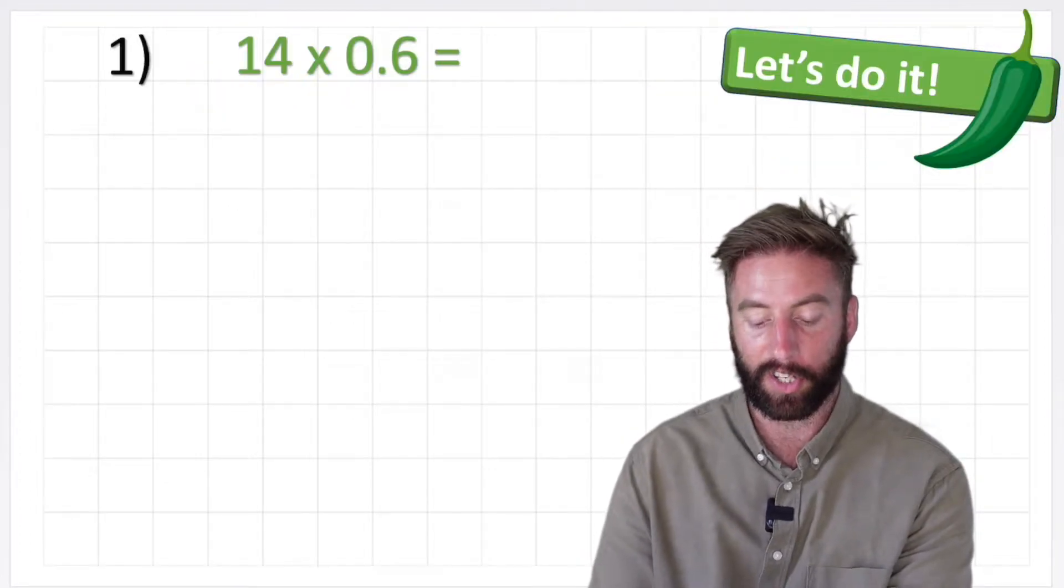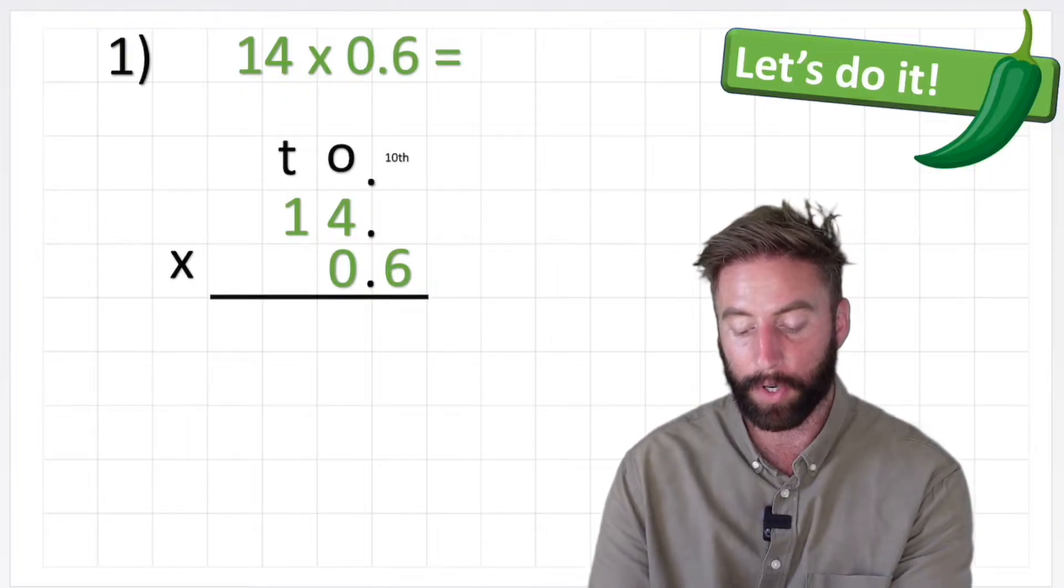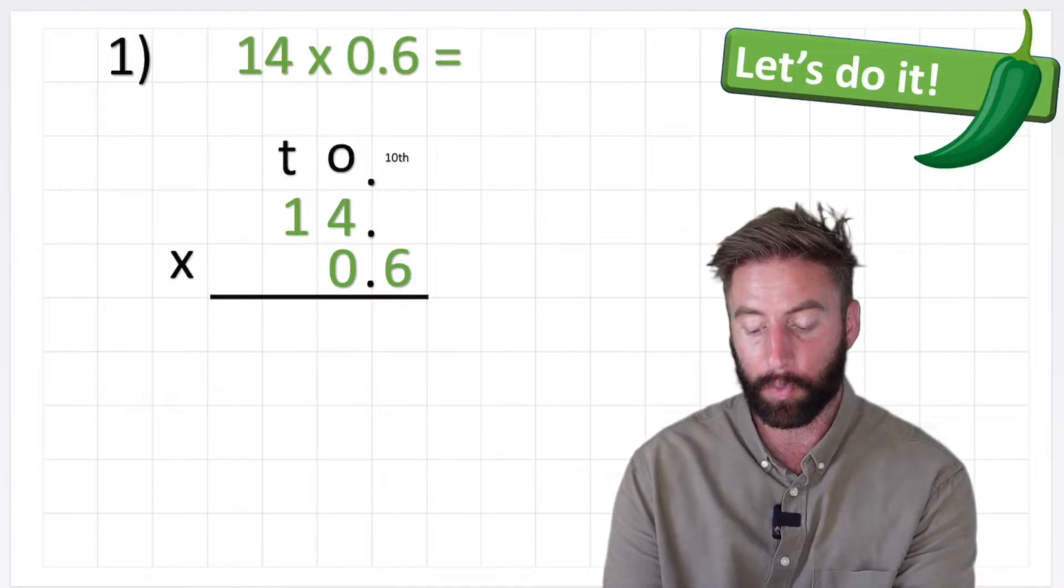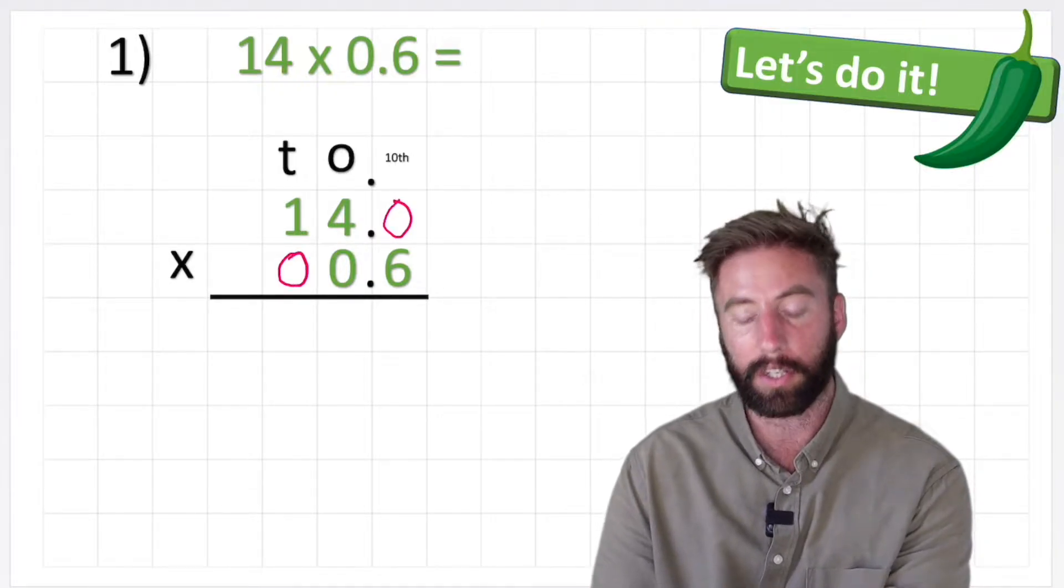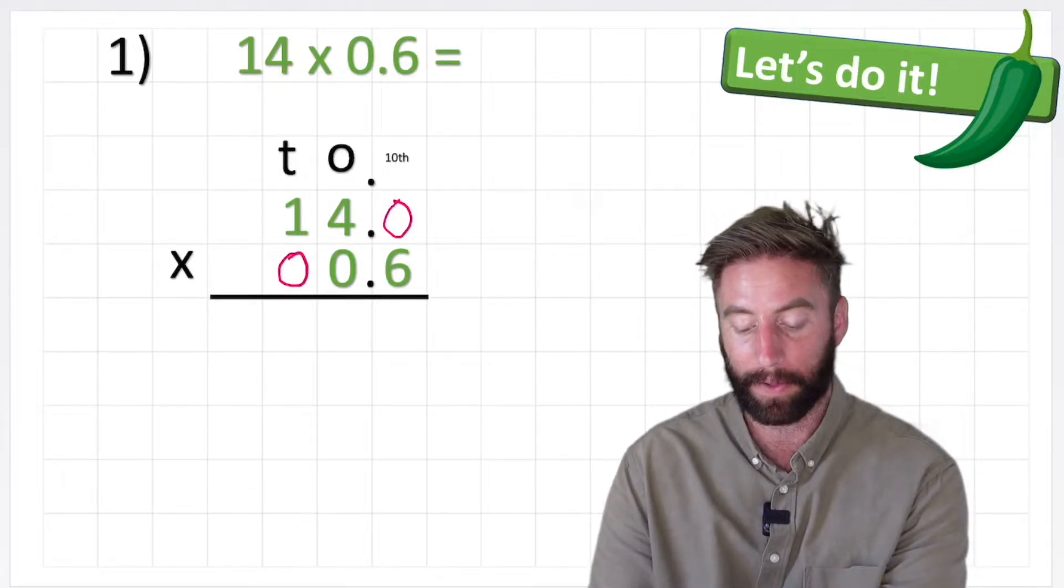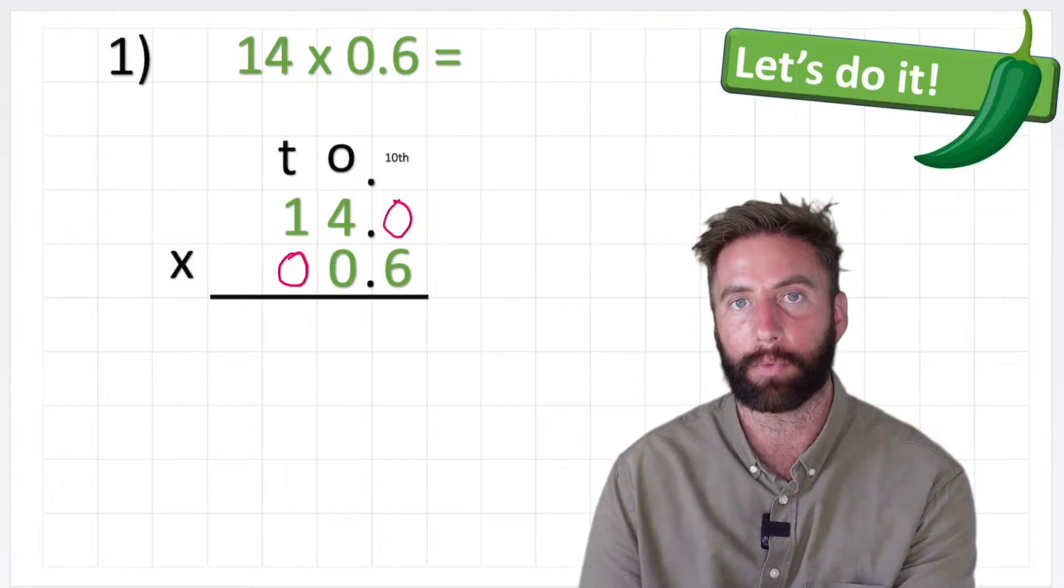Starting with our green chili challenge, we might be tempted to lay our question out in the traditional manner, which would look a little bit like this, and end up giving us these gaps that we could put placeholders in order to answer our question, but this is quite a long and complicated method. We're going to look at simplifying it a little bit today by getting rid of our decimals.